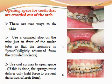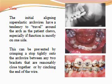Opening space for teeth that are crowded out of the arch can be done two ways. First, use a crimped stop on the wire just in front of the molar tube so that the arch wire is advanced from the crowded incisor. Second, use coil springs to open space. If this is done, the springs must deliver only light force to prevent distortion of arch form — otherwise this is an undesirable method. The initial alignment super-elastic arch wires have a tendency to travel around the arch as the patient chews, especially if function is mostly on one side. This can be prevented by crimping a stop tightly onto the arch wire between any two brackets that are reasonably close together, or by cinching the end of the wire.